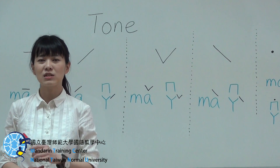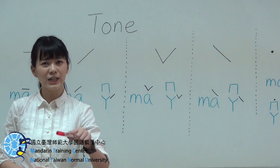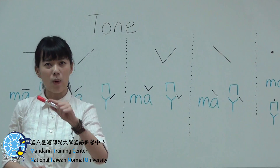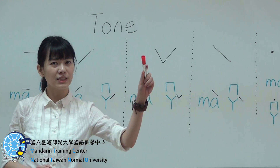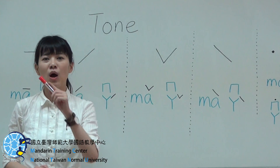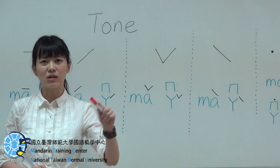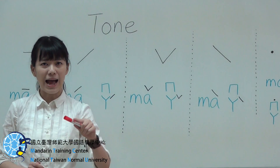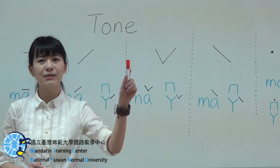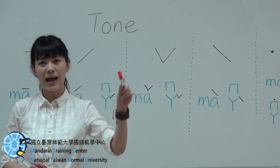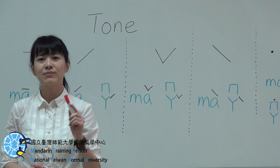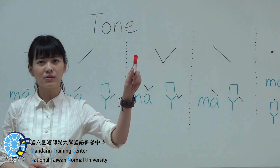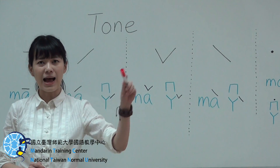The third tone is a falling and rising tone — like we say 'well' in English. For example: mǎ, mǎ. Well — mǎ. Good.